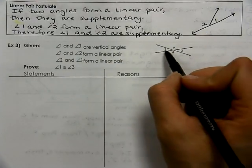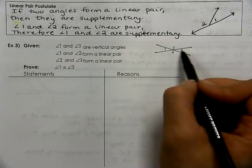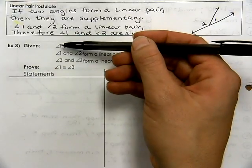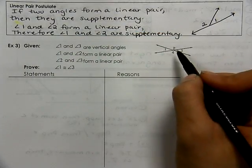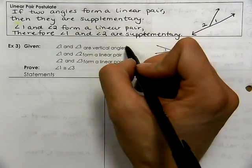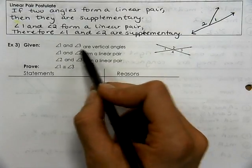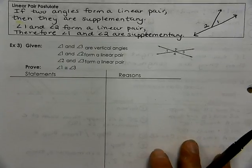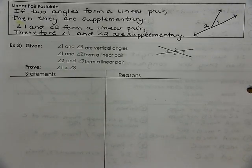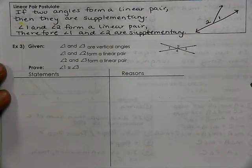So we're given that angle 1 and angle 3 are vertical angles, angle 1 and angle 2 form a linear pair, and angle 2 and angle 3 form a linear pair. We want to prove that if two angles are vertical angles, they must be congruent. We've talked about this in class already, but we need to formally prove it because it is a theorem. Go ahead and try this proof on your own right now.